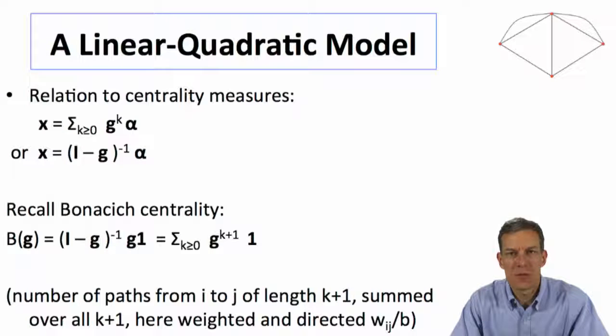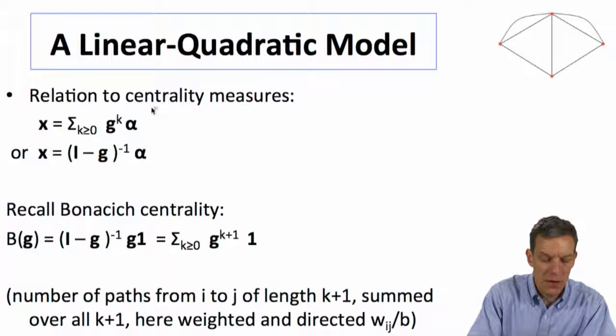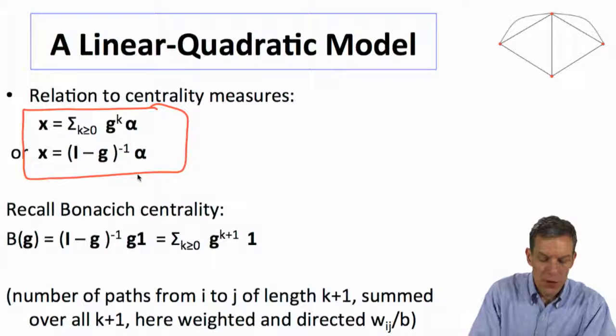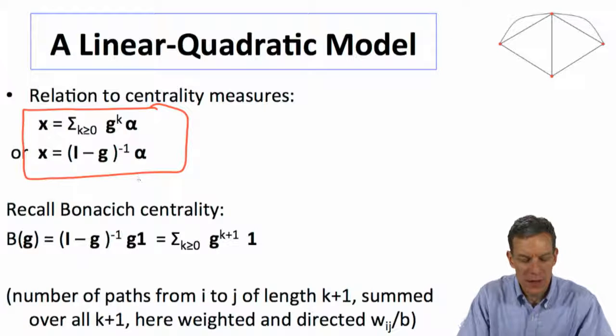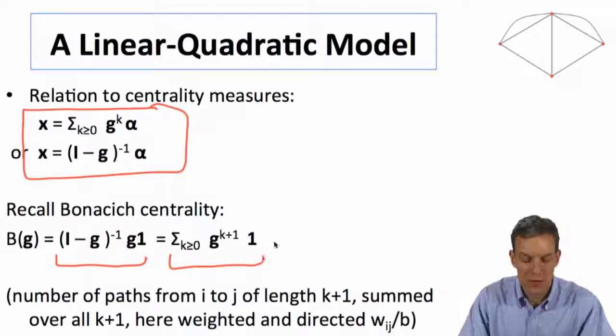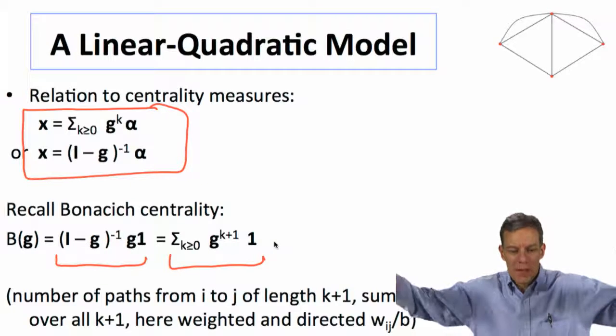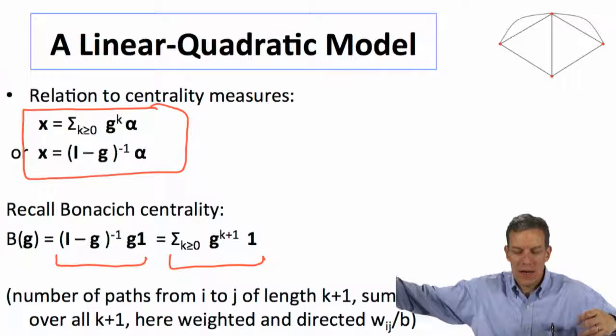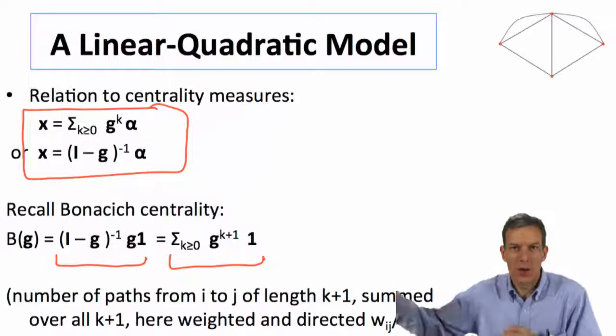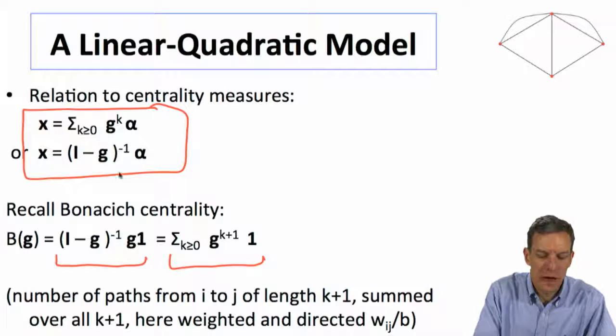And what's interesting is this relates back to our centrality measures. So let's have a look at this. So we've got our solution that we can write x in either of these forms. Recall that Bonacich's centrality looked like a calculation which was very similar to this. It looked like counting paths of different lengths from i's to different j's and then summing over all possible path lengths according to some weight.